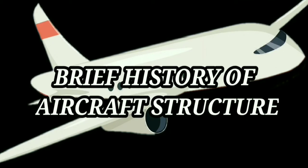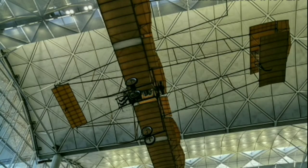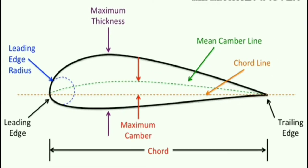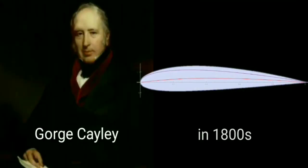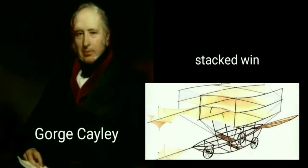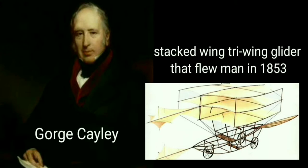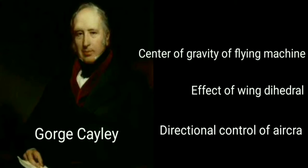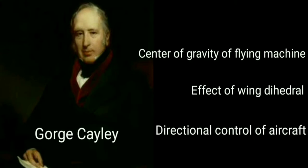Let's start the topic. The history of aircraft structure starts from a simple wood structure to the sleek aerodynamic flying machine of today. Airfoil shape is a key of an aircraft structure. George Cayley developed an efficient camber airfoil in the early 1800s, as well as a successful manned glider later in that century. Cayley was the first person who created a stacked wings dry-wings glider that flew a man in 1853. Cayley studied the center of gravity of flying machines and the effect of wing dihedral.